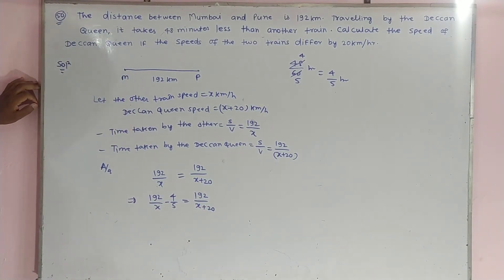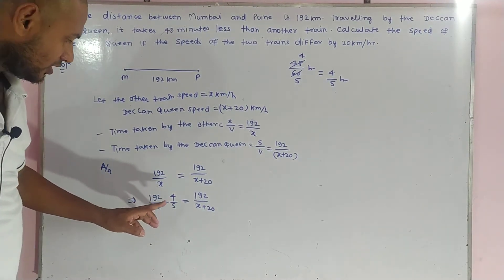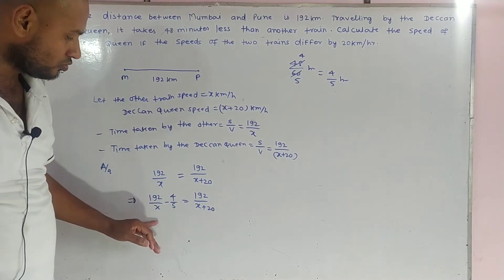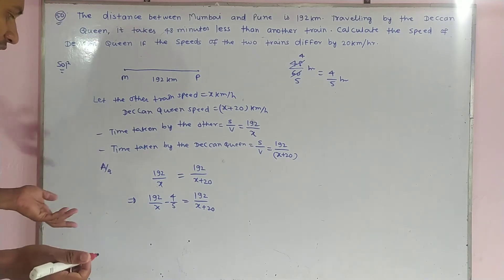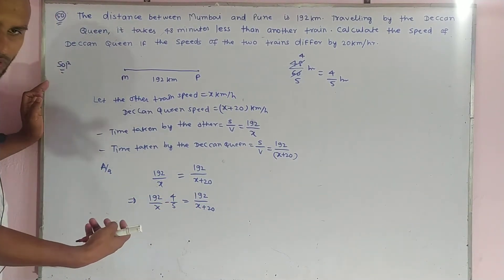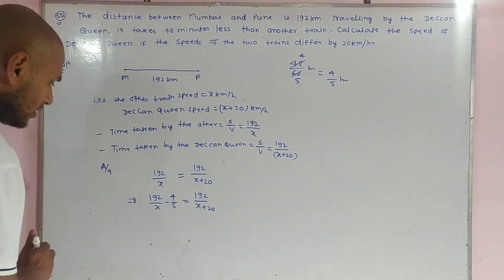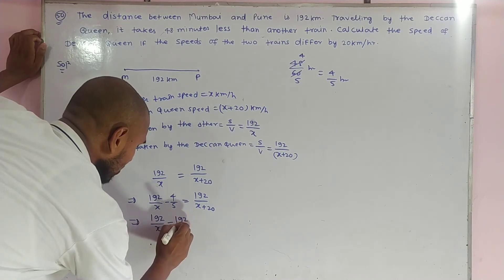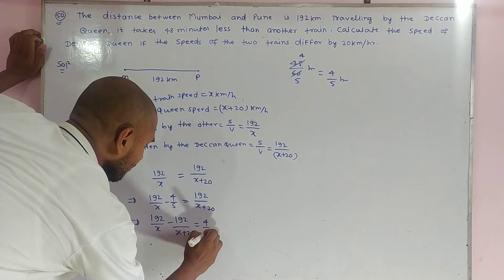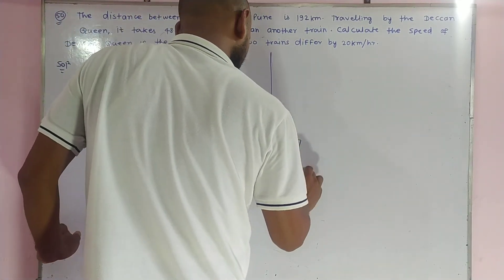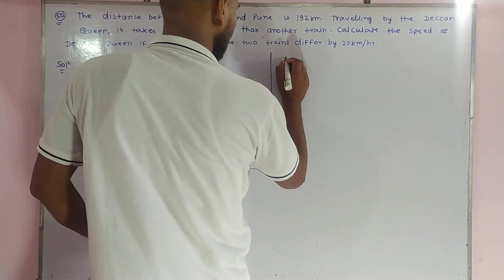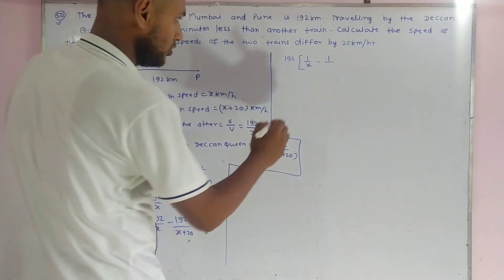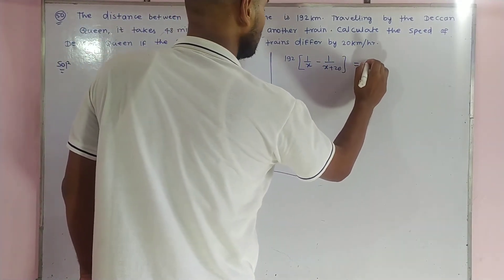The Deccan Queen takes lesser time by 4/5 hour compared to the other train. We are going to equate the two times. From the equation 192/x minus 192/(x+20) equals 4/5, we take 192 as common and find 1/x minus 1/(x+20) equals 4/5. Dividing both sides by 192, this gives 1/x minus 1/(x+20) equals 1 upon 5 times 48, that is 1/240.